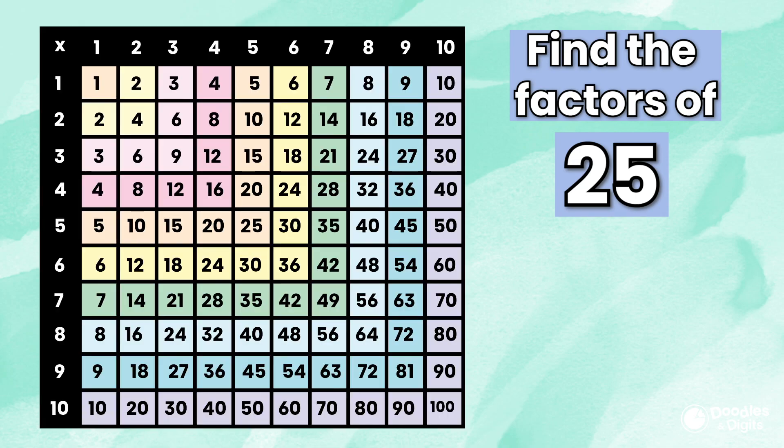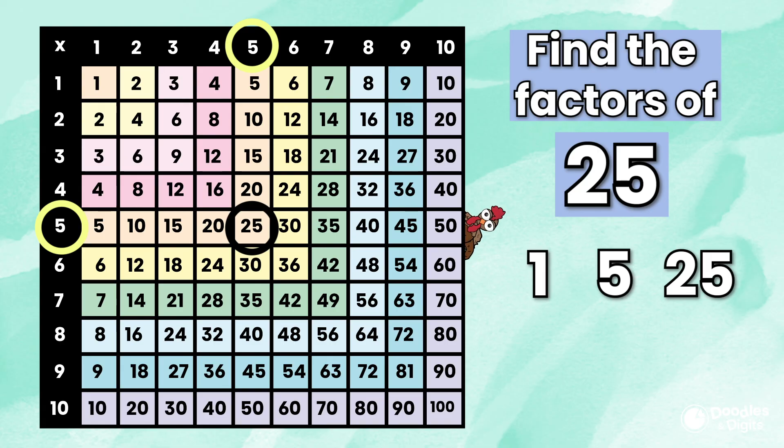Can you find all the factors of 25? I'm going to use a multiplication chart to help me solve this. Look, 25, the two factors are 5 and 5. So 25 actually only has 3 factors. 1 times 25 and 5 times 5. So the factors of 25 are 1, 5, and 25.